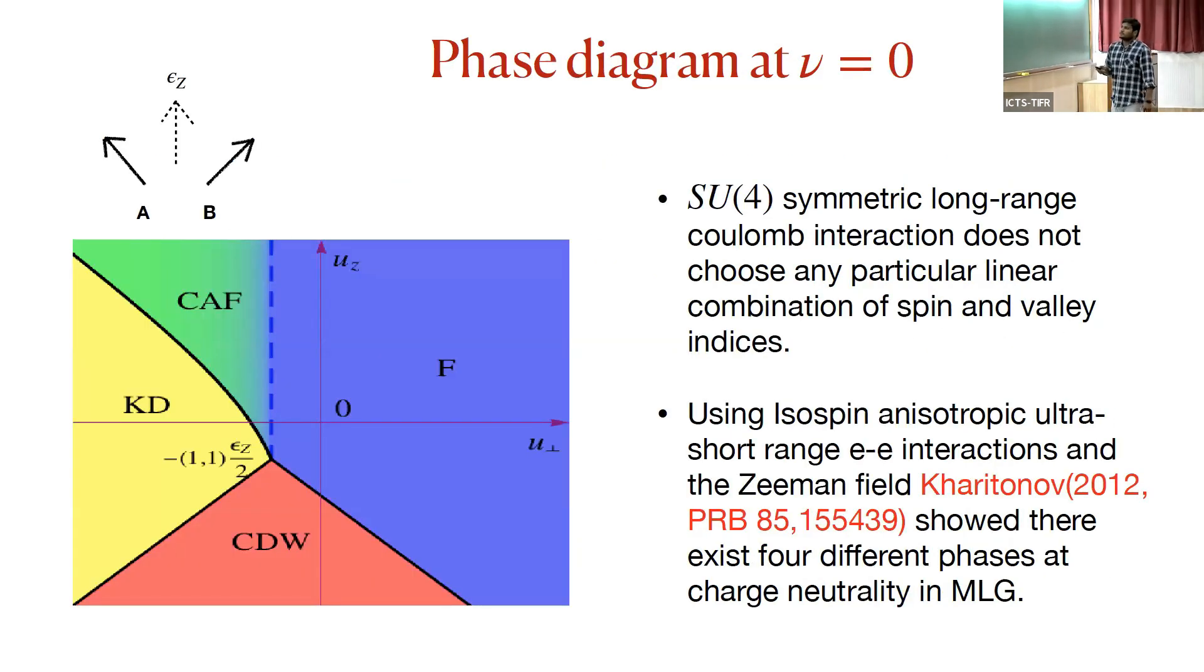It was found very early that if you only include the SU(4) symmetric long-range Coulomb interaction, it doesn't actually choose any kind of ordering in the system because it doesn't discriminate between any spin and valley indices.